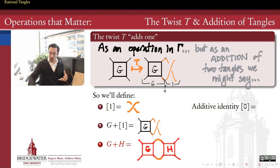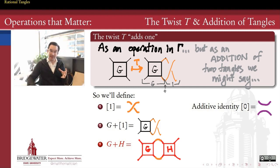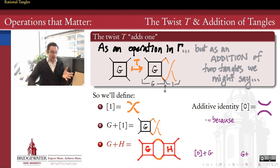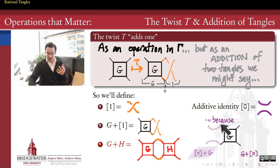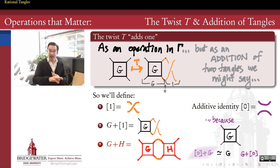Making that definition also clues us in to what the additive identity in tangle addition would look like — it's got to be the horizontal empty tangle. If we add the horizontal empty tangle to the left side of any tangle g, it connects horizontally to g on the top and bottom, but we can just shorten those strands back up and return to g. So adding the empty tangle on either side of g doesn't change the isotopy type of g.